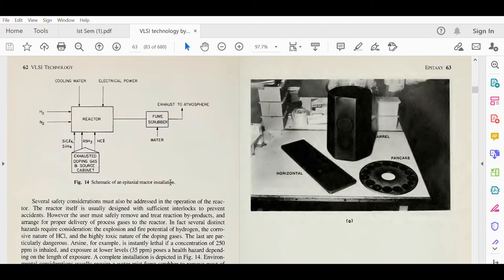This is the schematic of an epitaxial reactor installation. Inside the reactor, hydrogen and intrusion inlets are there. Cooling water is provided. This is the electrical power, the fume scrubber. Water is given, exhaust to the atmosphere, and all the doping elements like silicon tetrachloride, arsenic hydrides, and HCl gas are the inlet or input to the reactor.